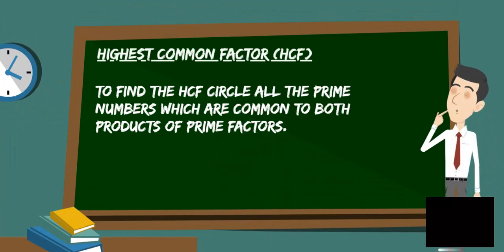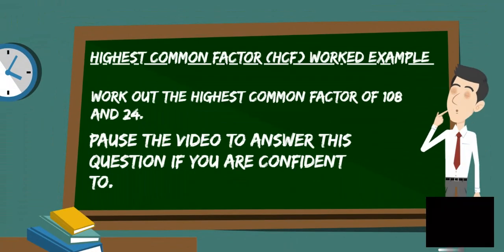To find the HCF, circle all the prime numbers which are common to both products of prime factors. Work out the highest common factor of 108 and 24. Pause the video to answer the question if you are confident to.